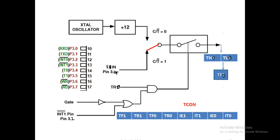In this program, we are using T0 as timer 0, so the physical pin is P3.4. I will connect the sensor or clock source to this physical pin. TR0 is used to run the timer, and since gate is configured as 0, TR0 equal to 1 is sufficient. The register will increment based on the external pin input — the sensor or clock source. Once it reaches FFFF, the TF0 flag will overflow.